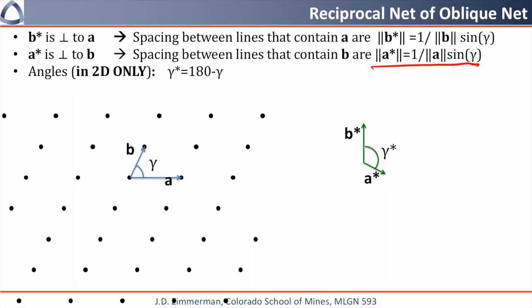The angle between them is gamma star, which in two dimensions only is going to be equal to 180 minus gamma. I want to point out now that the relationship is much more complicated when we move to three dimensions. Again, we will repeat the two translation vectors to create a reciprocal space net as shown.